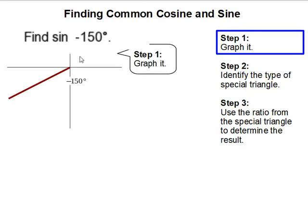So when I graph negative 150, I start right here. And since it's negative I go down and then over. So this is past the 90 degrees and then I go over a little bit to get negative 150 degrees.